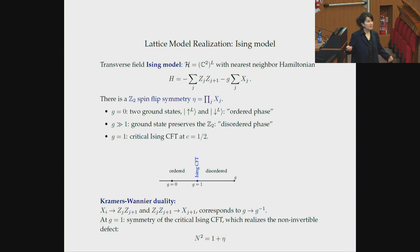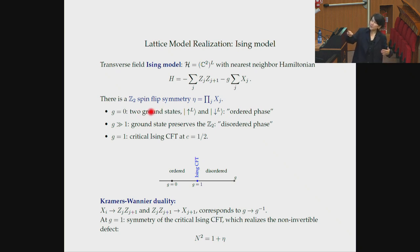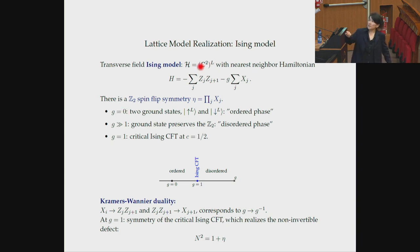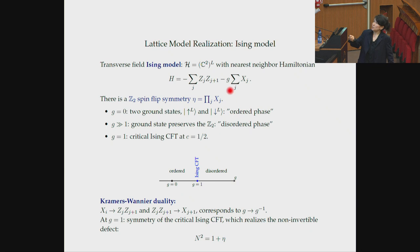There's a Z2 symmetry that gets broken or is unbroken in the various phases — it just flips the spin. The first phase with two ground states has all spins up or all spins down; that's the ordered phase, and the spin flip maps between these two. That's the case when G is set to zero. If the second term dominates, the ground state preserves the Z2 symmetry and we get a disordered phase. If G goes to one, we get the critical model, which is the Ising CFT with central charge one-half.